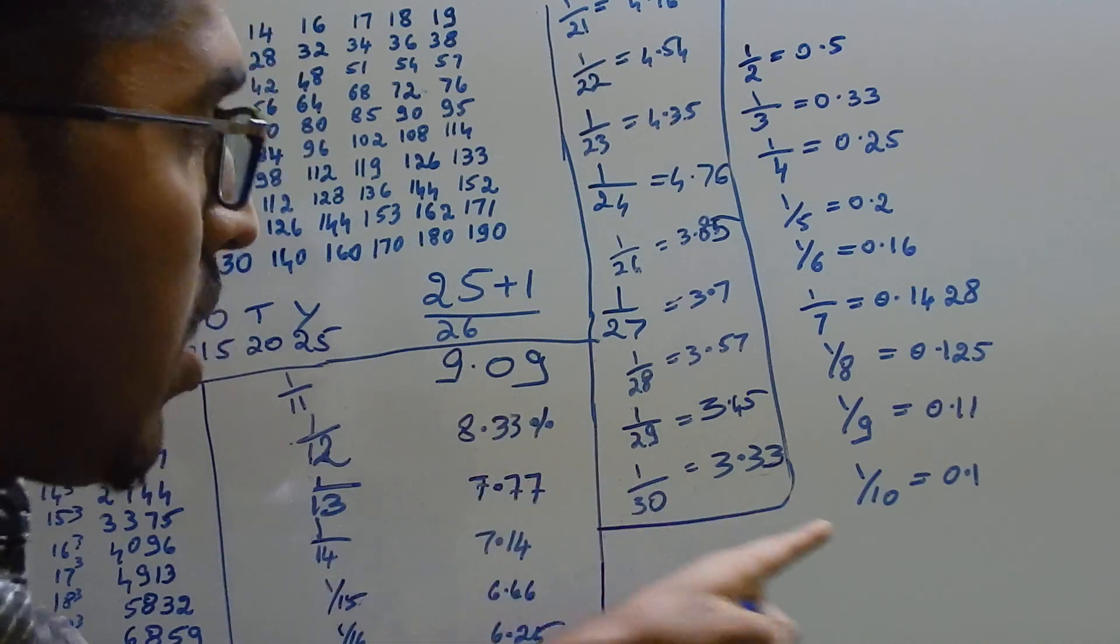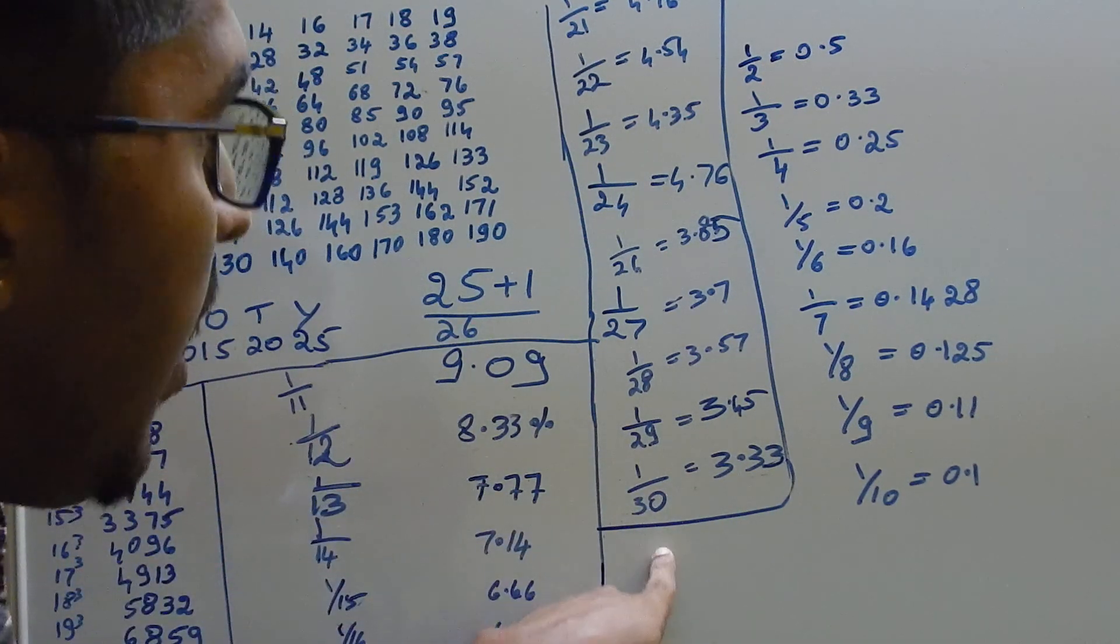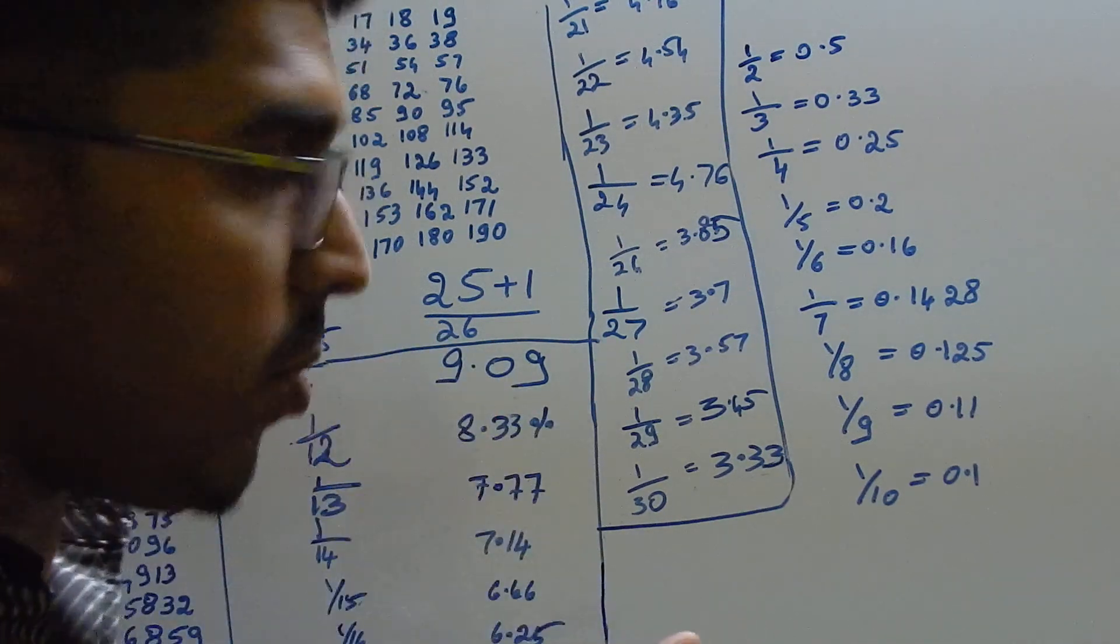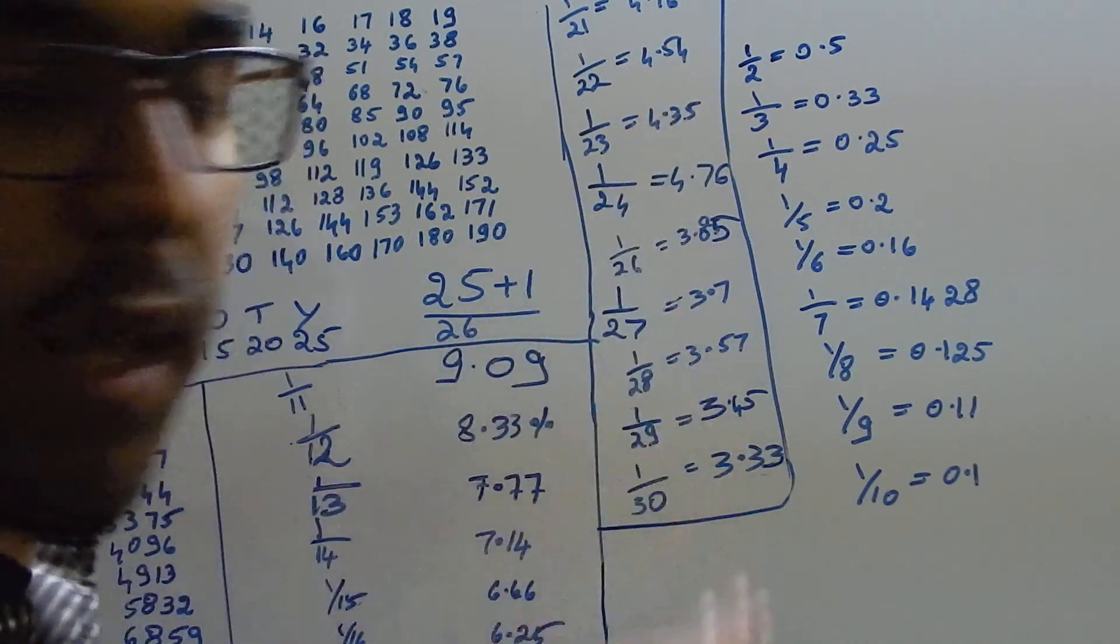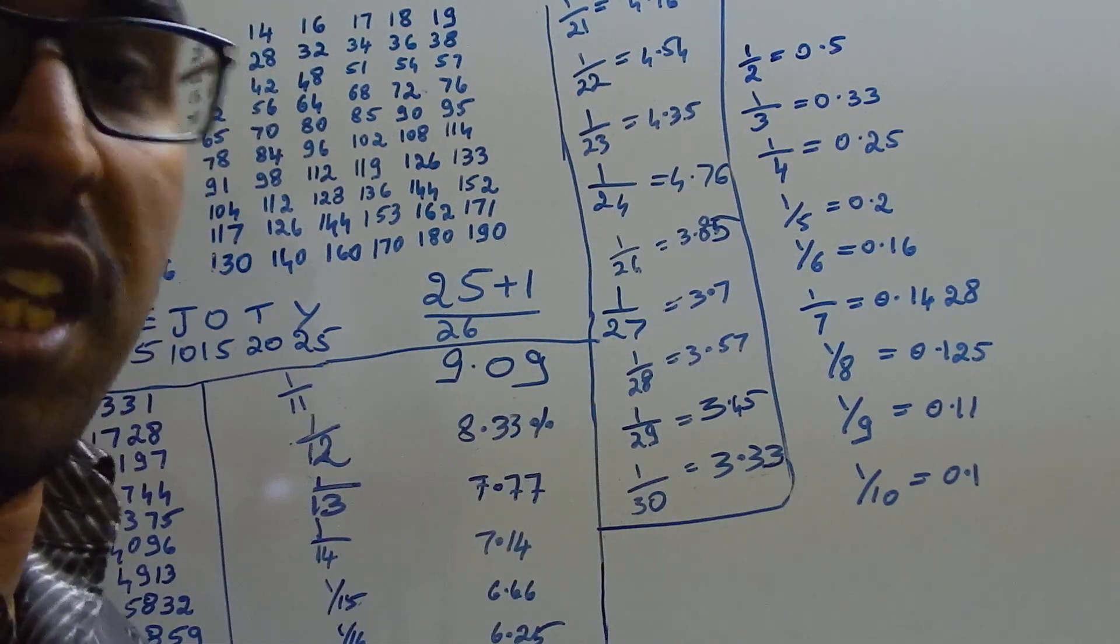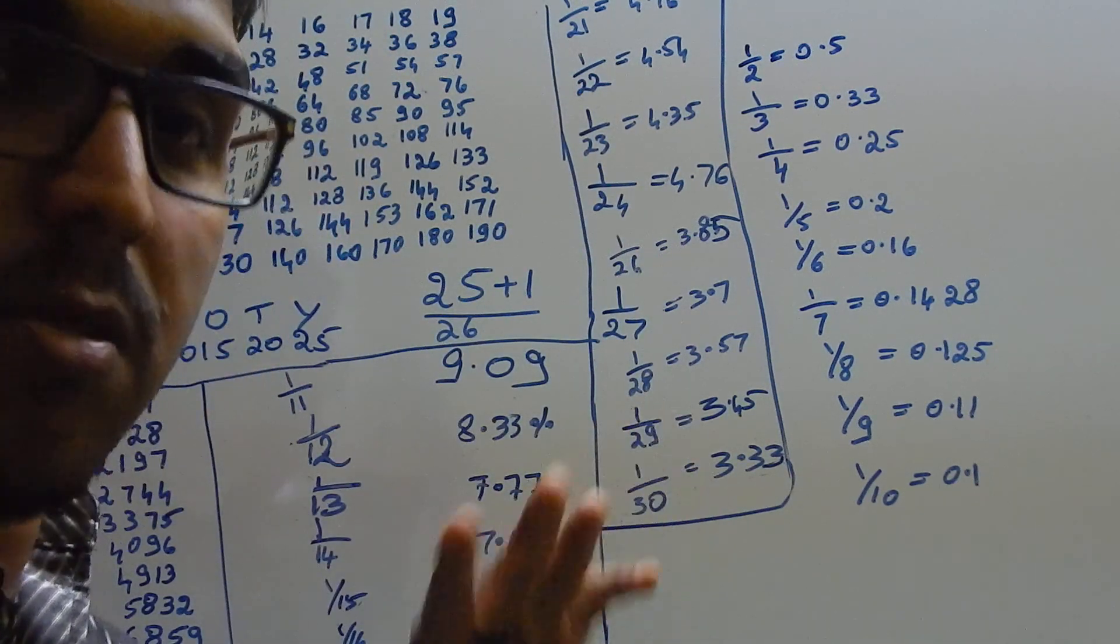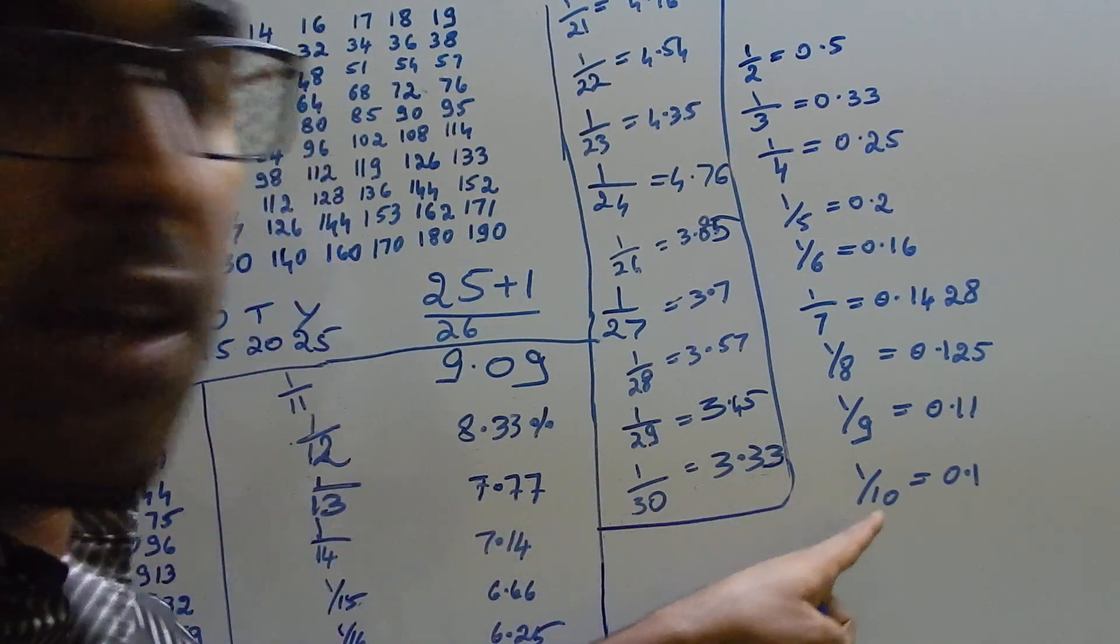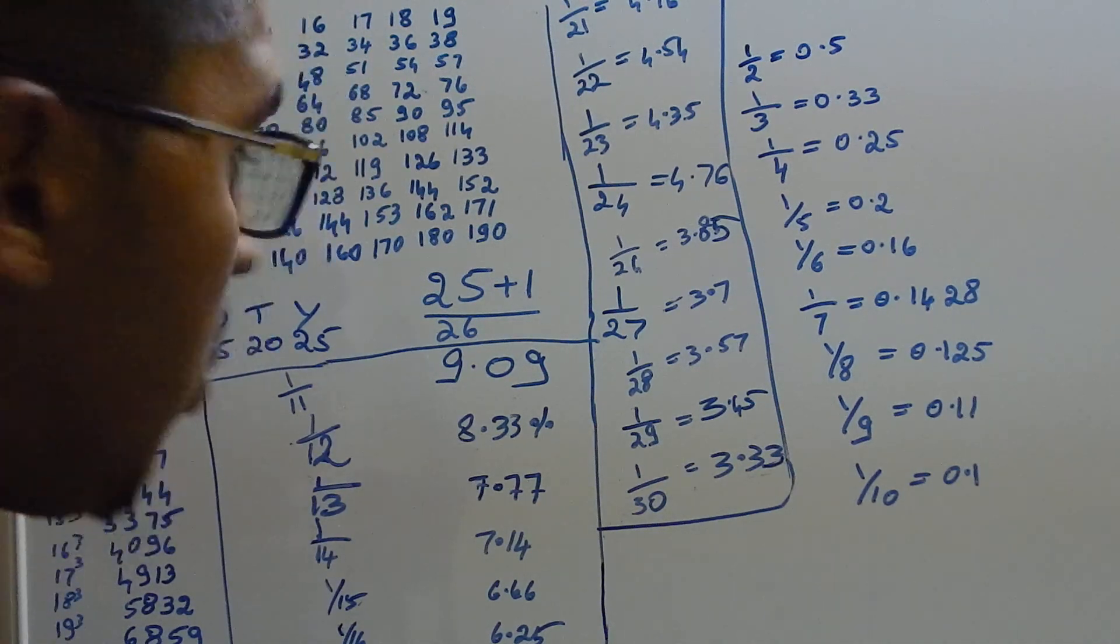Coming to reciprocals, 1 by 10 is over. Next, from 1 by 11 to 1 by 30, it is a bit difficult to remember. You should be writing and memorizing it every day. There's no tricks to remember these values. It is very good if you remember the reciprocals from 1 to 30. Next, coming to the cube section.